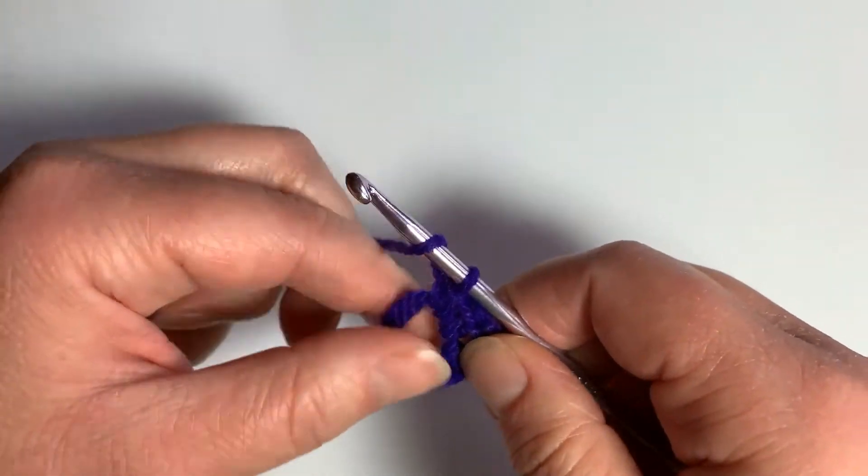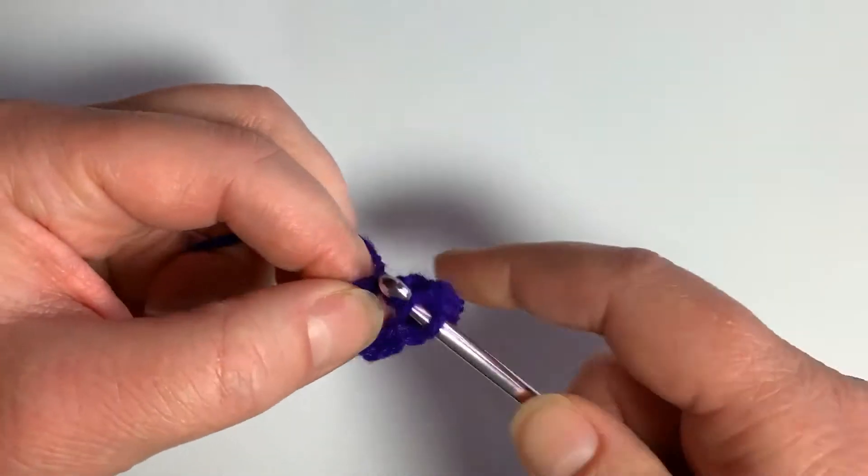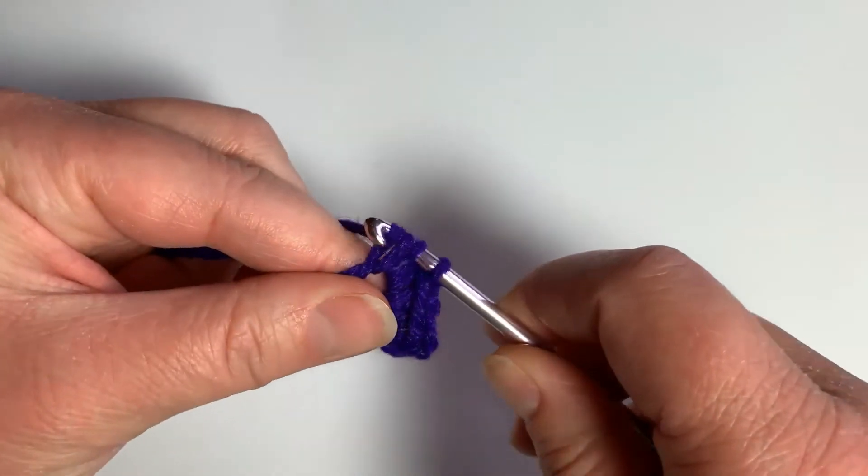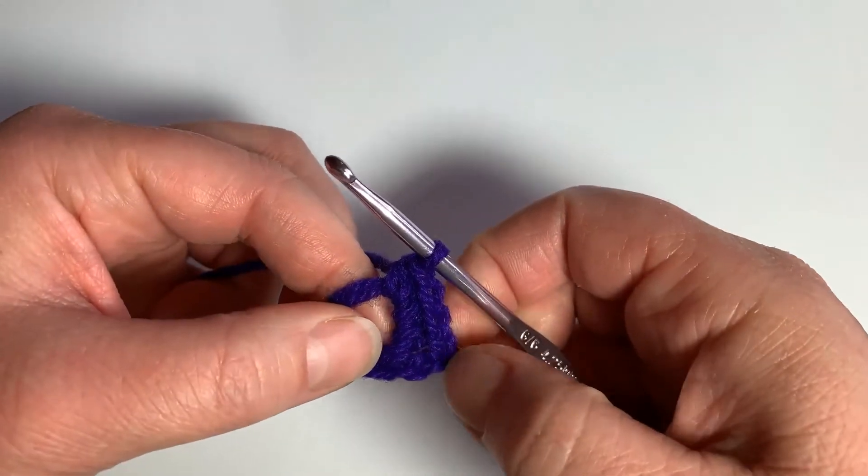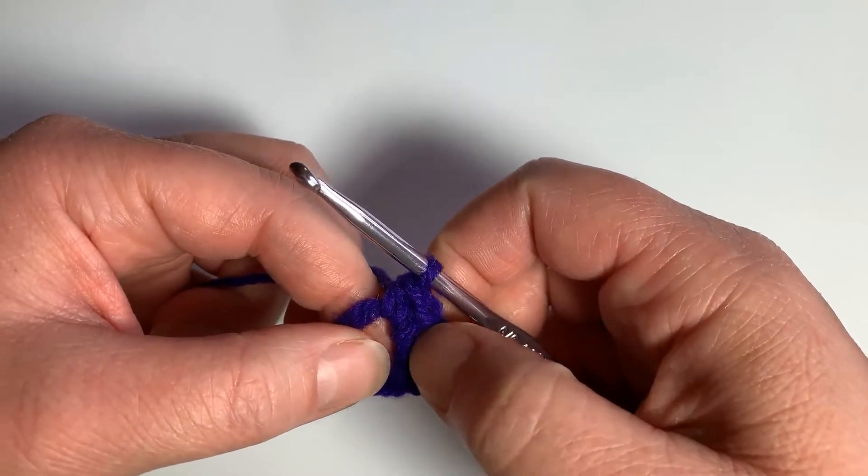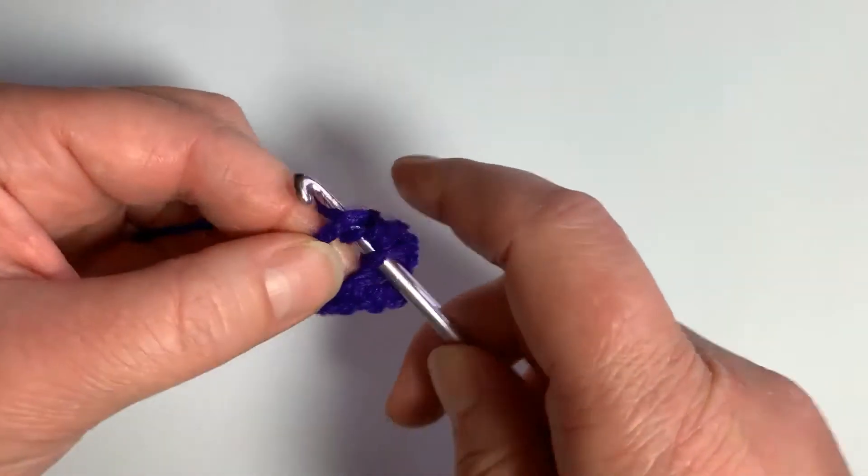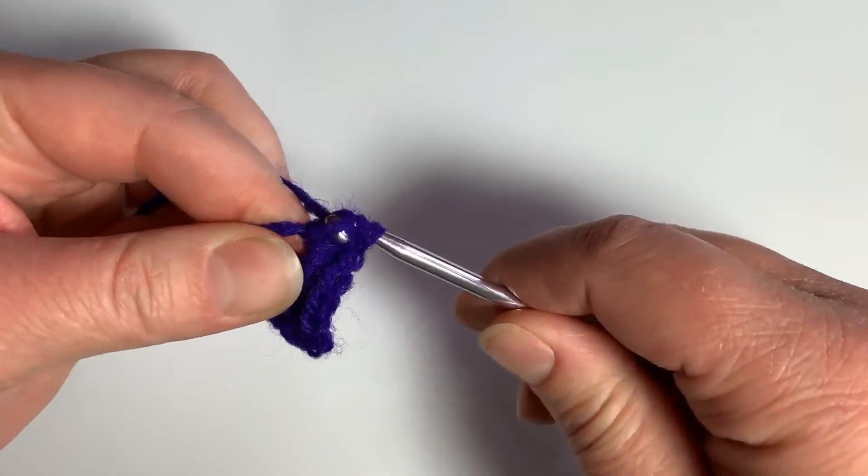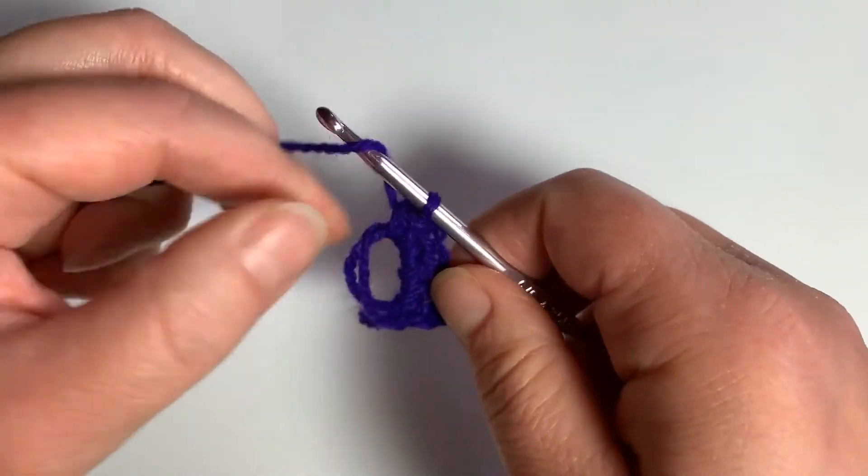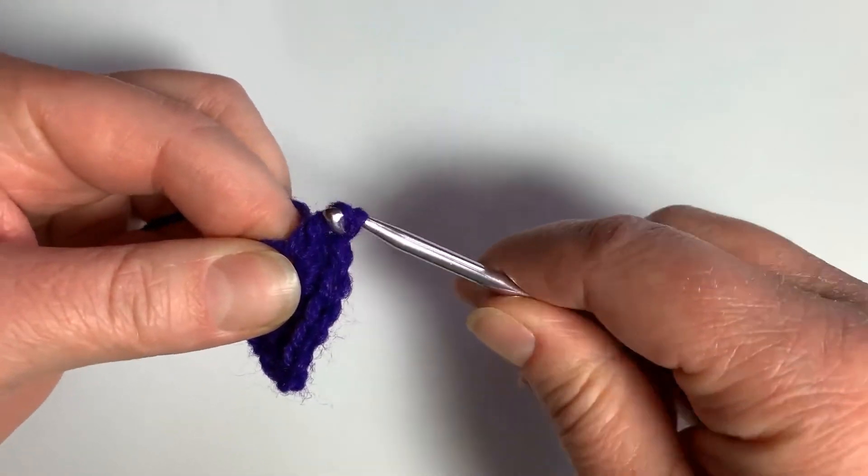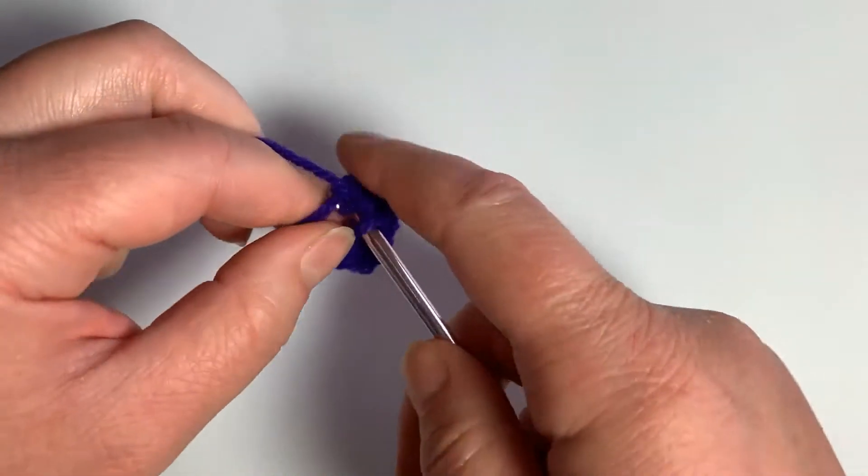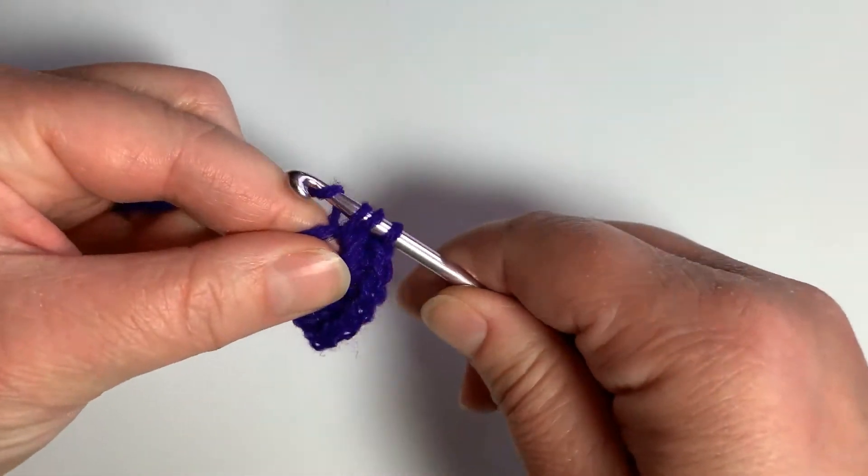If you're unsure how to half double crochet, go ahead and go check out my video. So we are at one, two, three, four, five, six, seven, and eight.